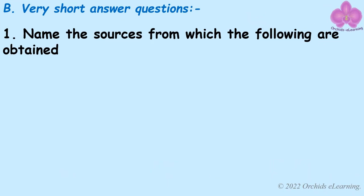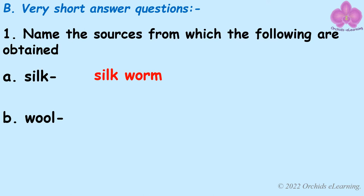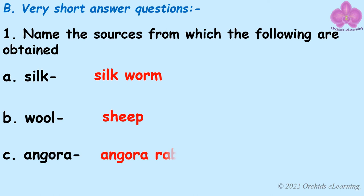Name the sources from which the following are obtained. Silk is obtained from the silkworm. Wool is obtained from sheep. Angora is obtained from the Angora Rabbit.